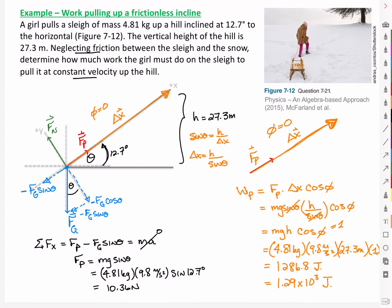Let's take inventory. We're told that it's constant velocity, so we balanced out the pulling force and the x component of the force of gravity to have zero acceleration, and therefore that gave us our pulling force of 10.36 newtons.